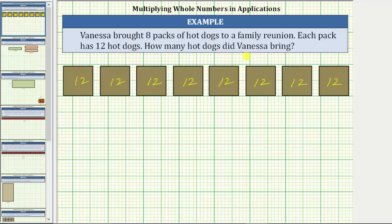To determine the number of hot dogs Vanessa brought, notice how we have eight copies of 12, or eight groups of 12 hot dogs, which means to determine the total number of hot dogs, we need to determine eight times 12, or the product of eight and 12.